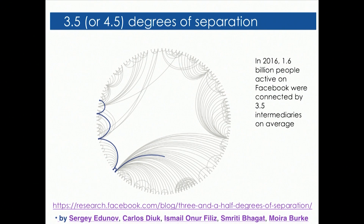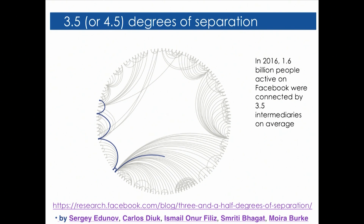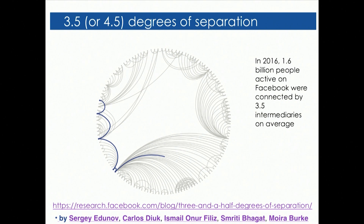One other thing you might ask is, now that there are so many people connected through Facebook, how many hops exactly does it take to get from one individual to any other on the globe through Facebook friendship ties? This is actually an interesting technical challenge, and you can read the blog post on how to do this estimate — not just overall, but for each individual to generate their average number of intermediaries to anyone else on the globe. This turned out to be 3.5 intermediaries, or equivalently 4.5 hops.